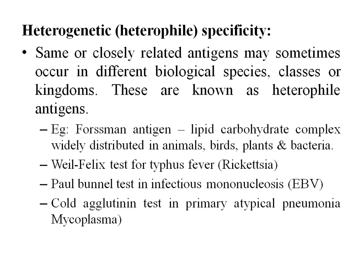An example is the Forssman antigen, which is a lipid-carbohydrate complex widely distributed in animals, birds, plants, and bacteria. The Weil-Felix test for typhus fever is another example, where Proteus O antigens cross-react with Rickettsia antigens — totally different species. Also, the Paul-Bunnell test in infectious mononucleosis, and the cold agglutinin test in primary atypical pneumonia due to Mycoplasma.